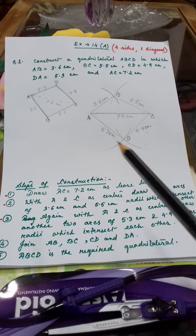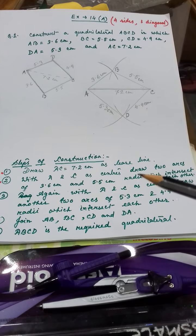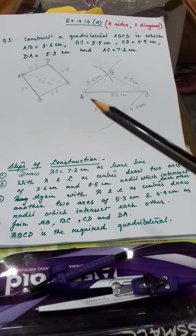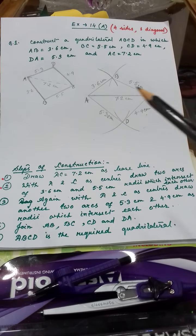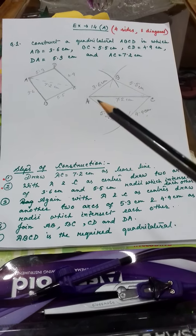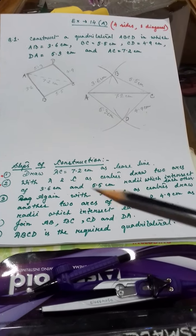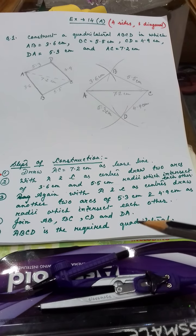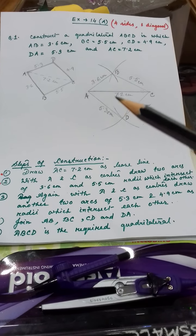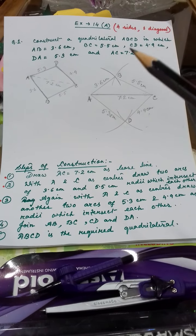After forming this construction, you have to write down the steps. The statements can be formed in your own language, but in a systematic, stepwise way — first what you have drawn, next which arcs you have drawn, which points you have joined. You can see here I have written the statements stepwise. The language can be changed, but it should be correct and systematic. This is how to construct a quadrilateral with four sides and one diagonal.